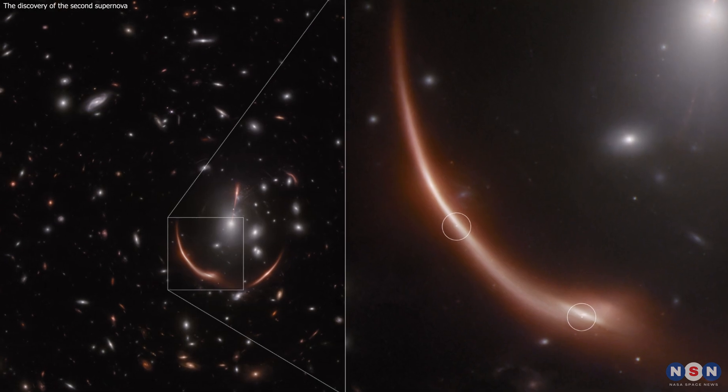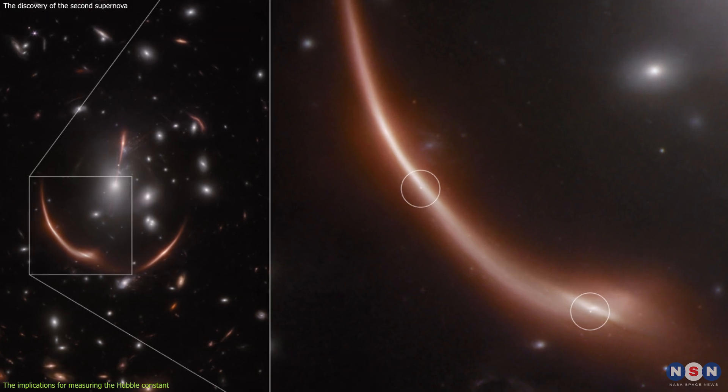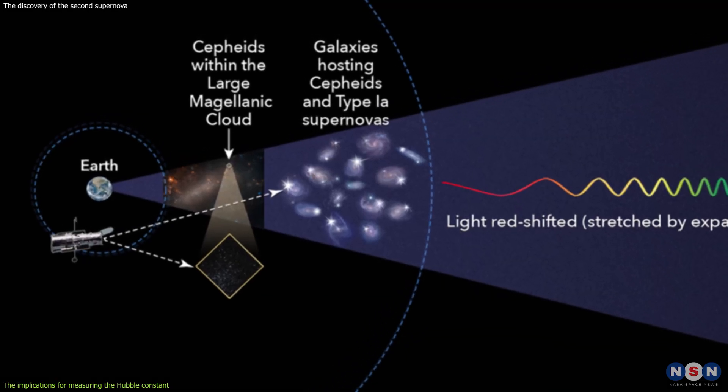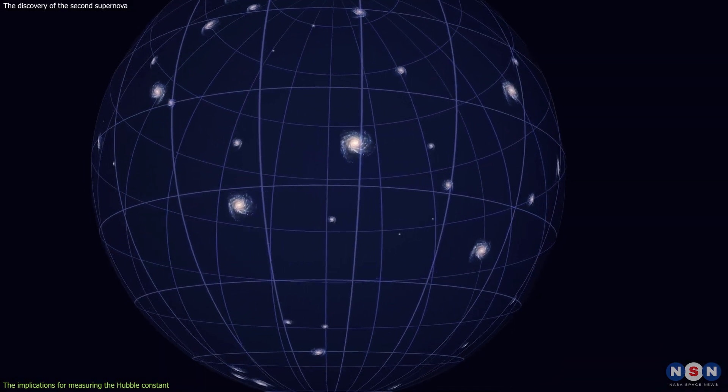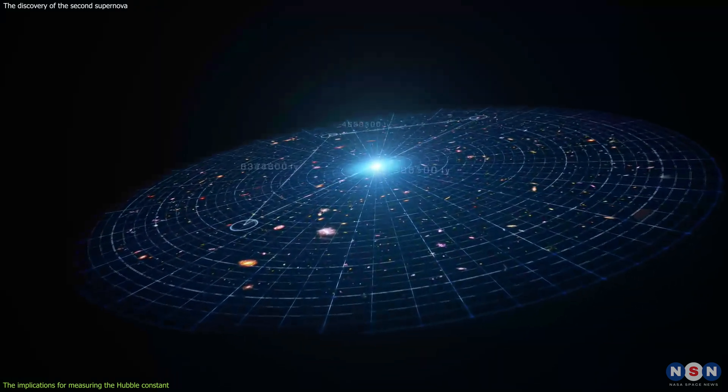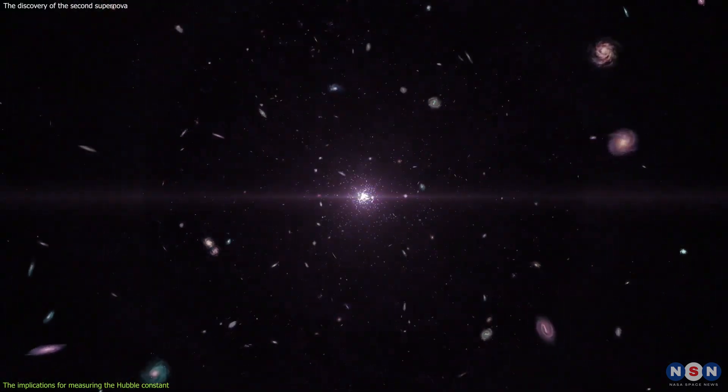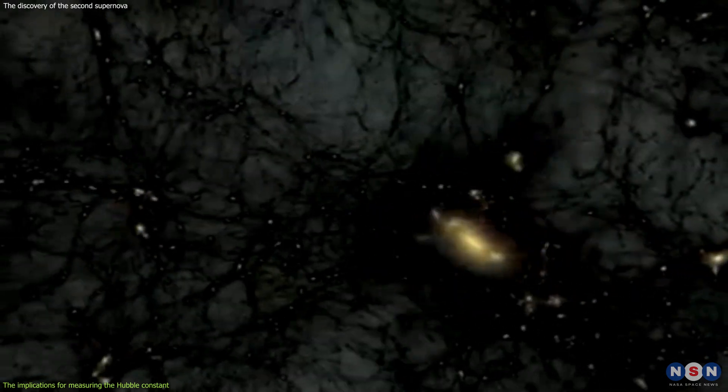So, why is observing the supernovae in this galaxy so important for cosmology? Well, because they can help us measure the Hubble constant, which is a key parameter that describes the expansion rate of the universe. The Hubble constant tells us how fast the universe is expanding and how old it is. It also affects our understanding of the origin and the fate of the universe, and the nature of the dark energy that drives the acceleration of the expansion.